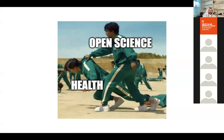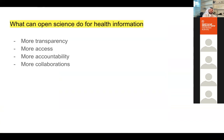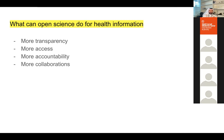What can open science do for health information? Open science can lead to more transparency, more access to information, more accessibility, more accountability, and more collaboration. Accountability and collaboration are extremely important in the medical field — accountability is vital. Let's look at some global open science initiatives related to health information.